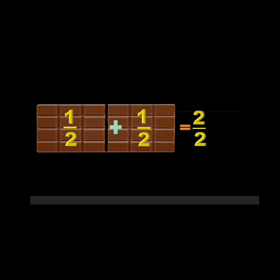Here, 2 upon 2 means the total chocolate bar is divided into two parts, so 2 is the denominator. And each time we are taking one and one, so 1 plus 1 equals 2. Here the numerator and denominator are both equal, that's why the sum is 1.